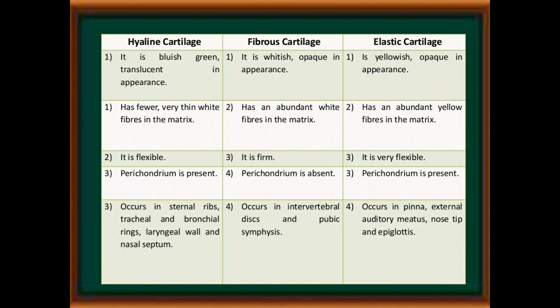Comparing the three main types: Hyaline cartilage is bluish-green and translucent; fibrous cartilage is whitish and opaque; elastic cartilage is yellowish and opaque. Hyaline has fewer, very thin white fibers in the matrix; fibrous has abundant white fibers; elastic has abundant yellow fibers. Hyaline is flexible; fibrous is firm; elastic is very flexible. Perichondrium is present in hyaline and elastic cartilage but absent in fibrous. Hyaline occurs in external ribs, tracheal and bronchial rings, laryngeal wall, and nasal septum. Fibrous occurs in intervertebral discs and pubic symphysis. Elastic occurs in pinna, external auditory meatus, nose tips, and epiglottis.